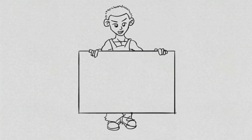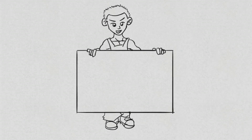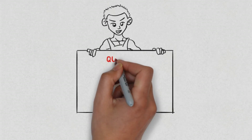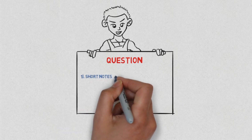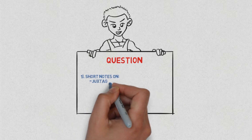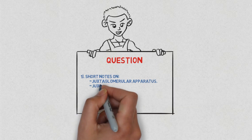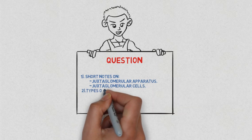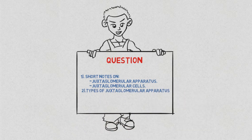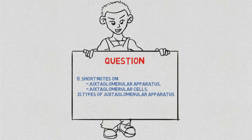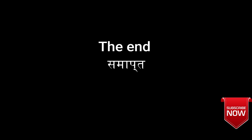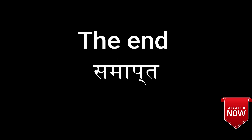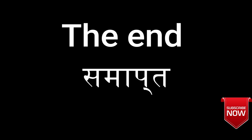Questions that may be asked in the exam from this topic: write short notes on the juxtaglomerular apparatus, or short notes on juxtaglomerular cells; and what are the types of juxtaglomerular apparatus? If you liked the video, hit the thumbs up button, share it with your friends, and subscribe to my channel for more updates. See you soon, bye bye.